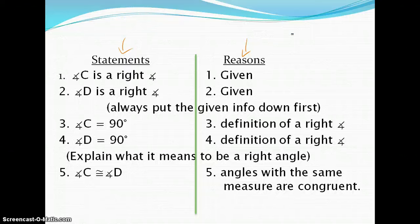Then, we have said that angle C is 90 degrees. That's the definition of a right angle. That's our reason. Same thing for angle D. What we're doing there is we're explaining what it means to be a right angle.